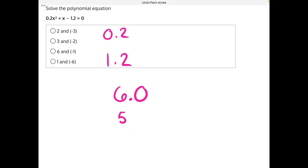So what we can do to figure out how to change these decimals into numbers like those is temporarily move the decimal place one place to the right. So these numbers would become 2 and 12.